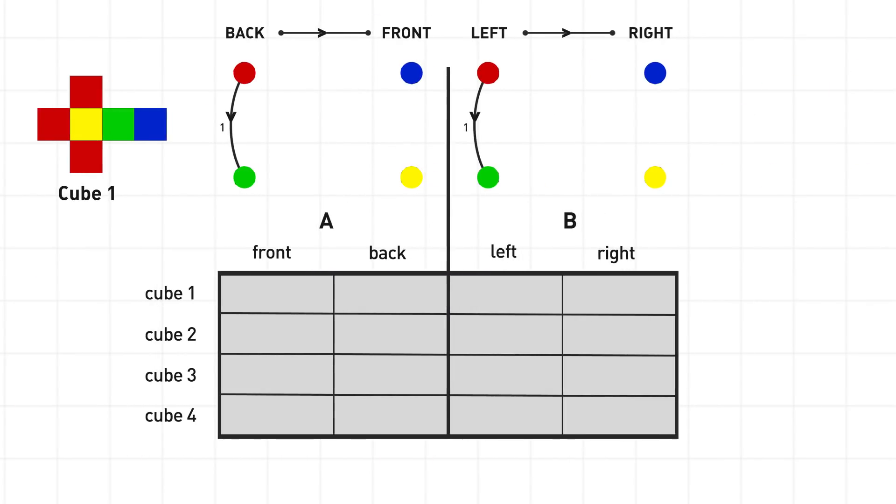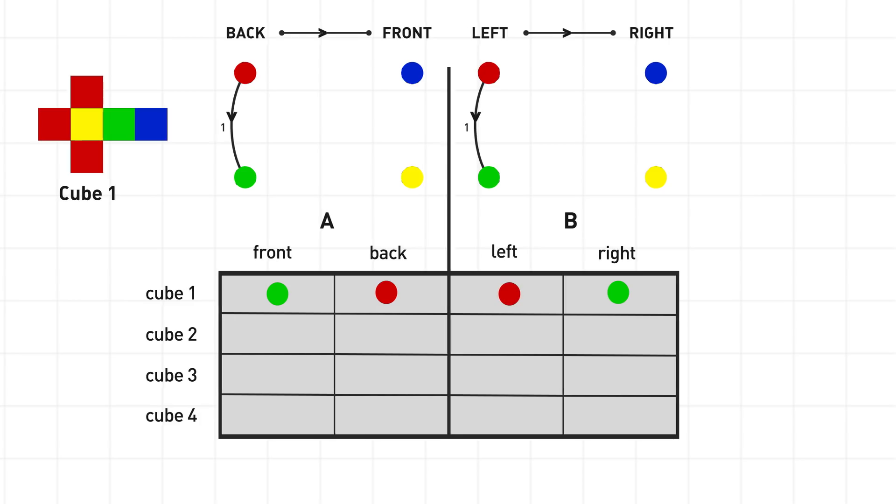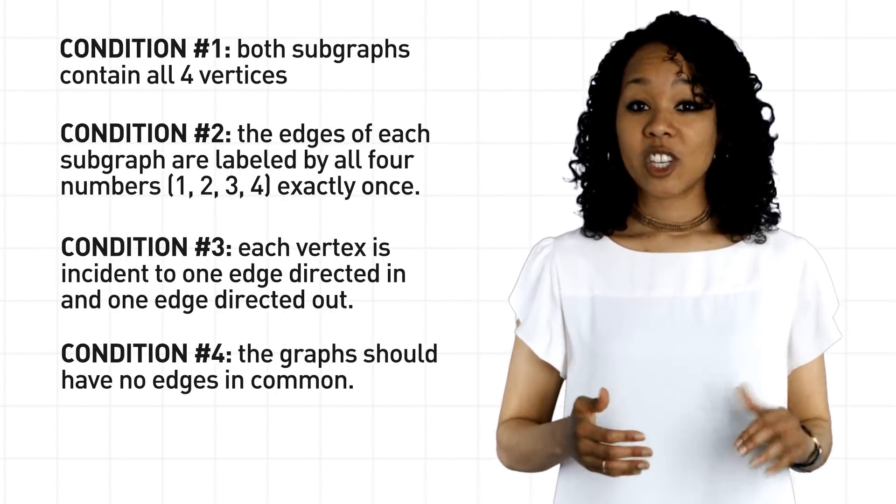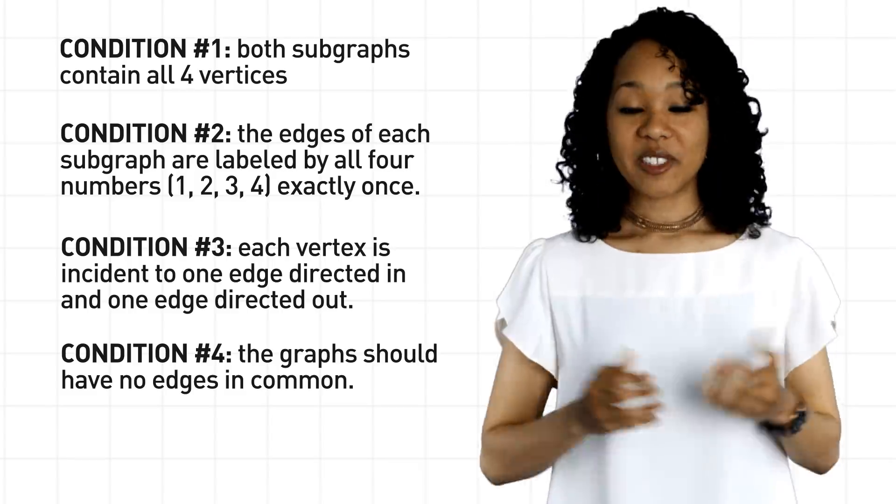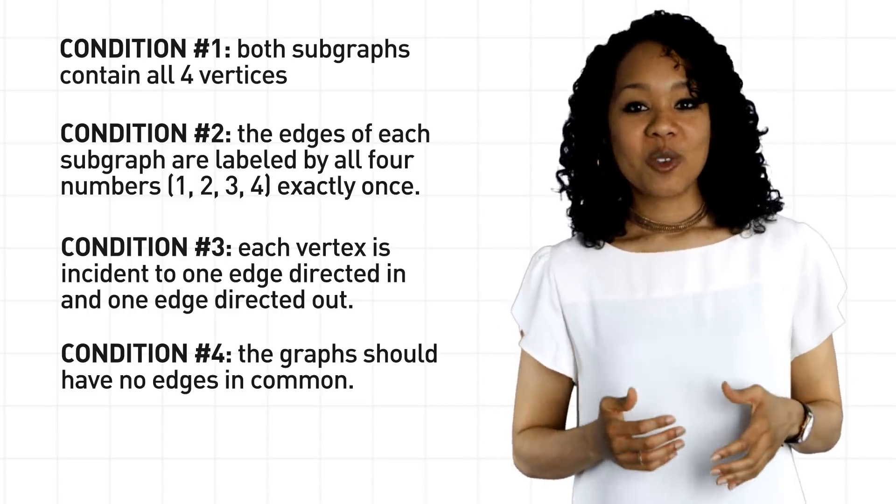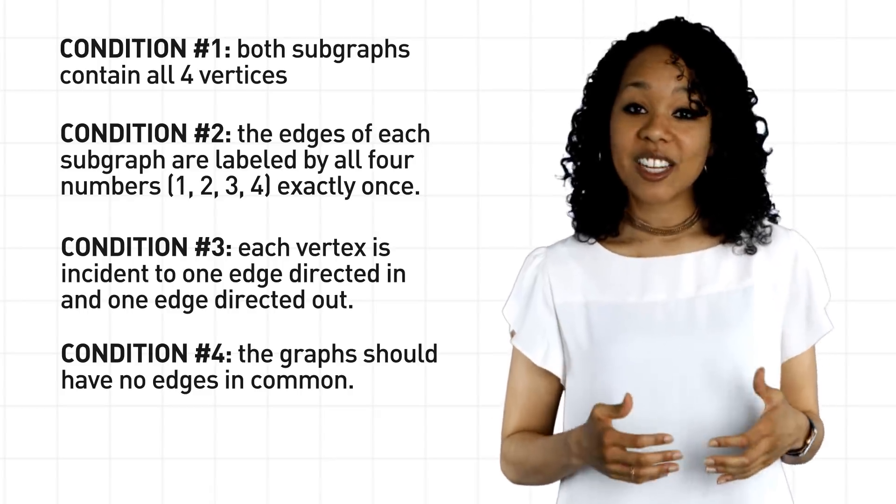Whatever the correct subgraphs are, we don't want them to have any edges in common. For example, if both A and B have this edge labeled 1, then we'd need to stack cube number 1 so that green faces the front and red faces the back, while simultaneously having green face the right and red face the left. But that's nonsense because you need two copies of cube number 1. So let's add condition number four. The subgraphs should not have any edges in common. All right, I claim that does the trick. All we need to do is pick out two subgraphs of the graph that satisfy these four conditions, and we've solved the puzzle.